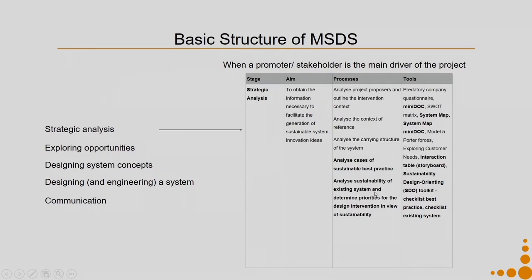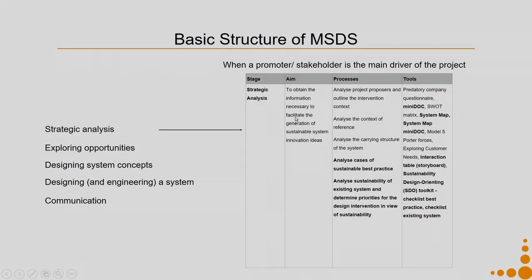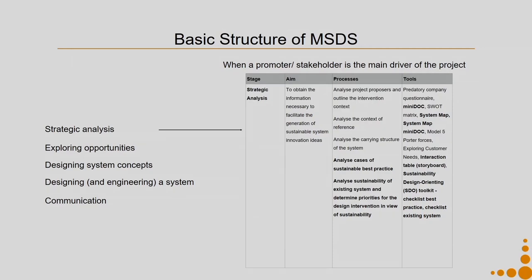If no such solutions are available, we have no choice but to skip this particular step. The next process is to analyze the sustainability of the existing system and determine priorities for the design intervention in view of sustainability. That completes our strategic analysis — we have now obtained the information necessary to facilitate the generation of sustainable system innovation ideas: we know about the project promoters, the context, the carrying structure, sustainable best practices, and we have determined our design priorities.